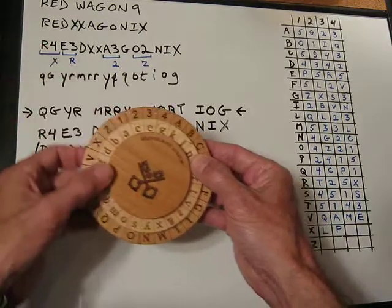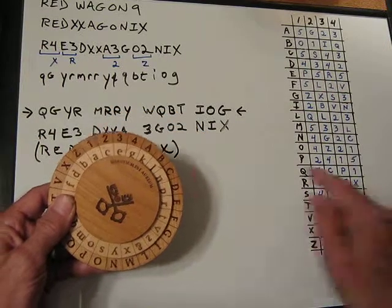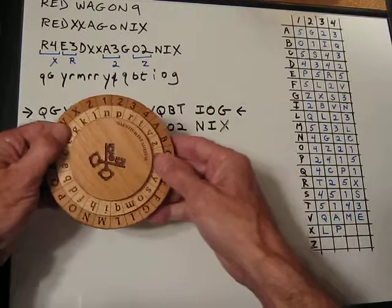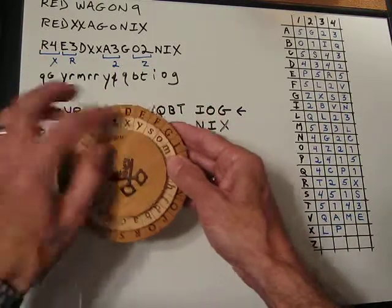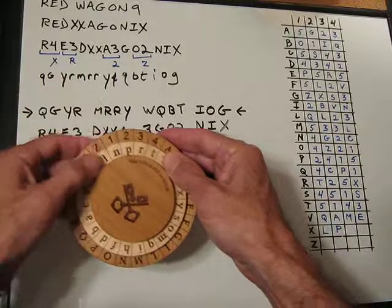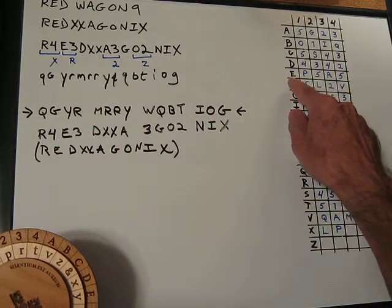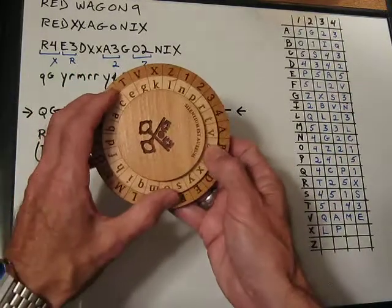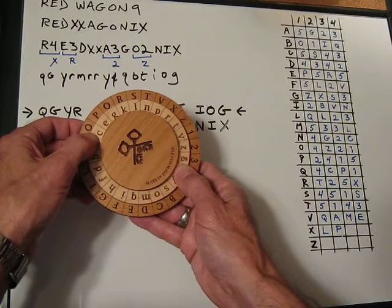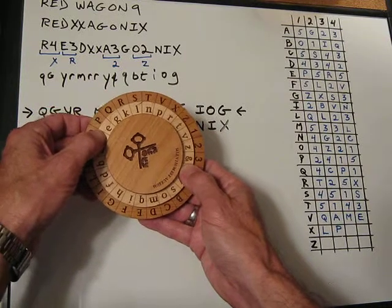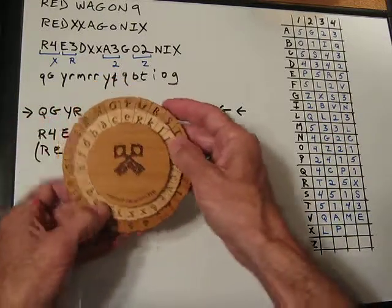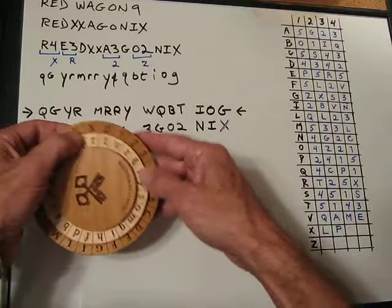What we do is: we go R4, look it up — R over to 4 says X. So we take our K pointer and put it under X. Now we continue with E, which becomes Y, and then a 3 which becomes R. We look up E3, which is an R, and we move our pointer K to R. Then we continue with D, which will be M, and XX which will be RR, and so on.